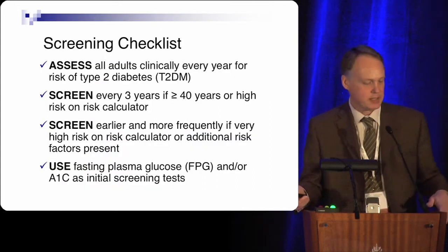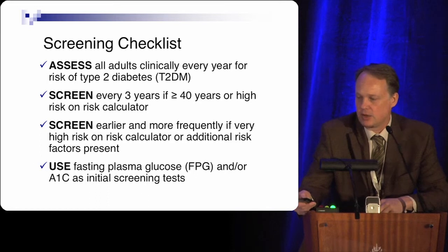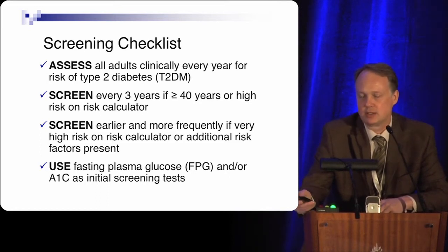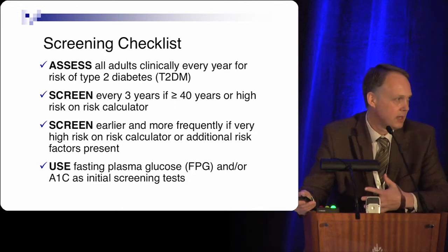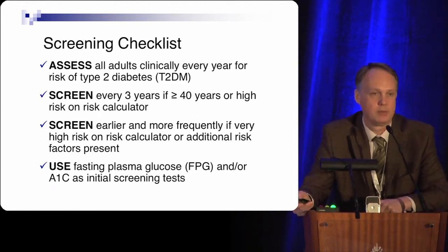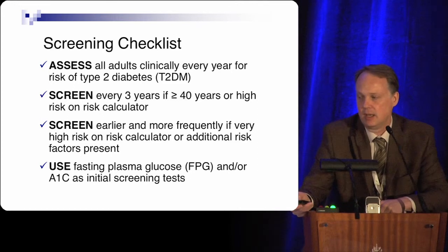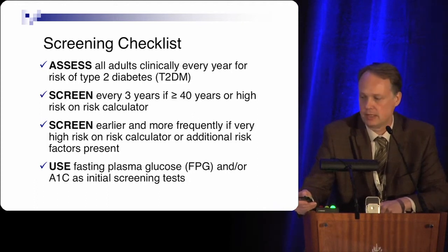We'll go through a screening checklist as a general guide for diabetes. The CDA currently recommends assessing all adults every year for the risk of type 2 diabetes using a risk calculator. For those considered high risk or over the age of 40, it's recommended to screen using one of the recommended screening tests every three years, or earlier and more frequently if they're at very high risk based on their risk calculator score.